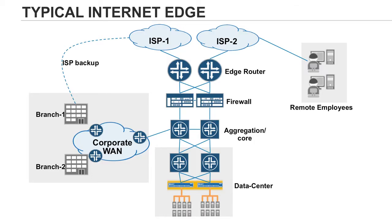Users within the internal corporate network will have to access the Internet through this gateway. In a typical Internet edge deployment, the legacy infrastructure consists of multiple devices, each limited to a specific routing or security function. Such an infrastructure cannot scale. Bandwidth demands and application performance requirements can be met only by forklift upgrades. The upshot of multiple devices in a legacy infrastructure is complexity and the significant level of effort required to manage the network.